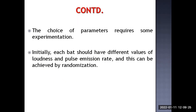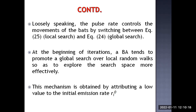The choice of parameters requires some experimentation — based on several experiments we can determine ideal values for alpha and gamma. Initially, each bat should have different values of loudness and pulse emission rate, achieved through randomization. Every bat searches for food independently, sending signals at different loudness and pulse emission rates to identify prey.